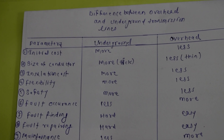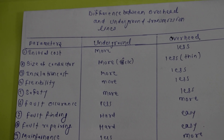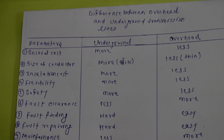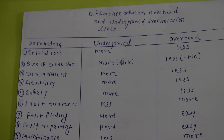Now we come to safety. In the case of safety, the overhead transmission line is less safe than underground. The underground transmission line is safer because if there is any fault or short-circuit, humans, animals, and plants are not harmed.